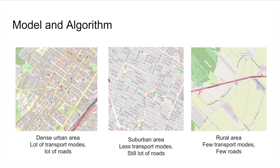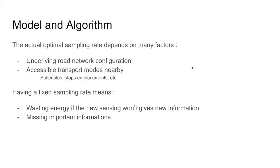In a rural area, there's really few transport modes—basically just cars and walking—and there are fewer roads. Even if you are on the highways, you will probably stay on the highway for quite a while. As I was saying, the actual optimal sampling rate depends on many factors: the underlying road network configuration and the accessible transport modes nearby that the user can take. It depends on the schedule of the bus and the subway, the actual stops and placement, etc. That means that having a fixed sampling rate will waste energy if the new sensing won't give you any new information on the state of the user.